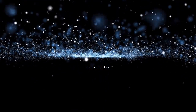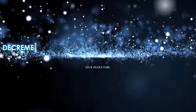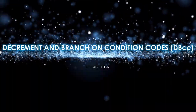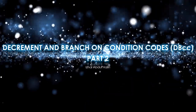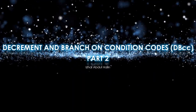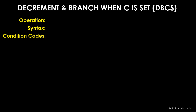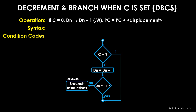My name is Ishul Abdul Halane. Welcome to my video on the Decrement and Branch on Condition Codes instruction, part 2. Let's study the Decrement and Branch When C is Set instruction. This instruction first checks the C flag's value. If the value is 0, a branch is initiated as depicted in the flowchart. If C equals 1, the branch does not occur.